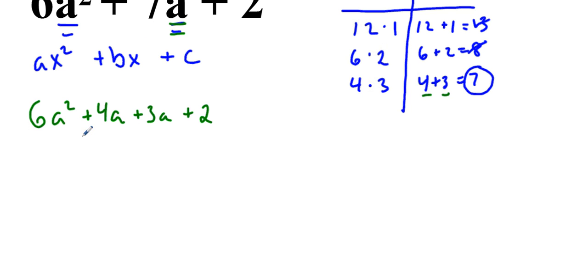What we're going to do instead is we're going to group these two. The 6a squared plus the 4a, and then 3a plus 2. So this is what is referred to as grouping.